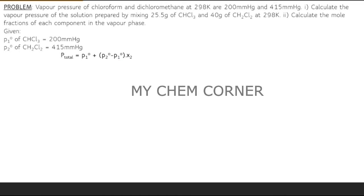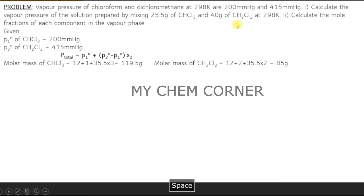To find x2 we need the number of moles, and for that we need the molar mass of each compound. First, calculate the molar mass of CHCl₃ and CH₂Cl₂. If you're unsure how to calculate molar mass, a detailed earlier video covers this. Once you have the molar masses, number of moles = given mass ÷ molar mass.